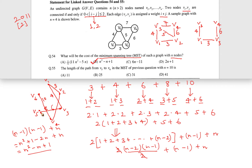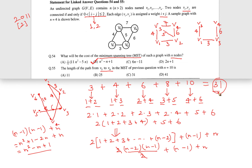Here we can clearly see that the path is going to be V5 to V3 to V1 to V2 to V4 to V6, which is exactly the addition of all the edges in this diagram: 3 plus 4 plus 6 plus 8 plus 10, which comes out to be 31. So the summation is 31, which is exactly the path length from V5 to V6. The answer in this case is C, 31.